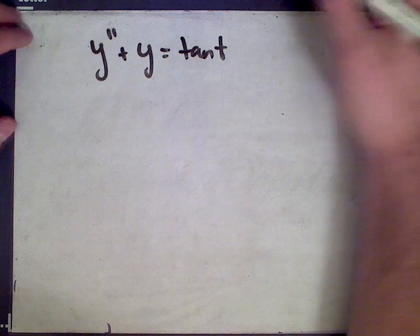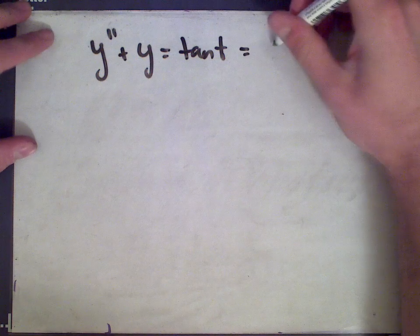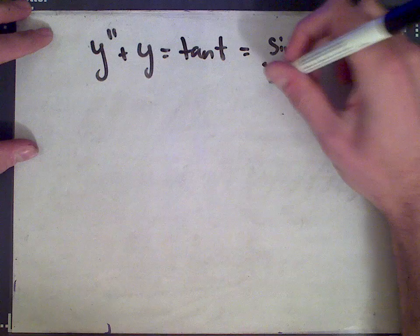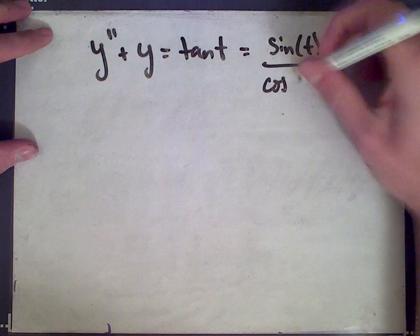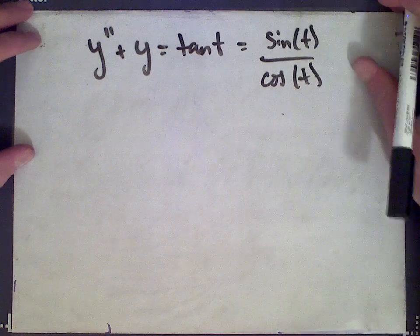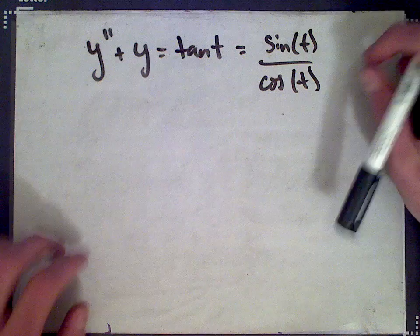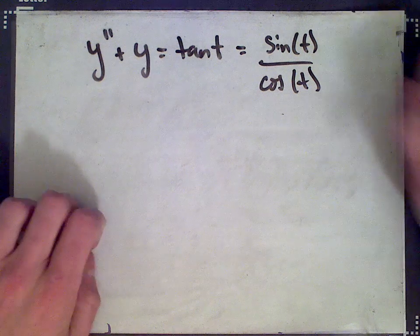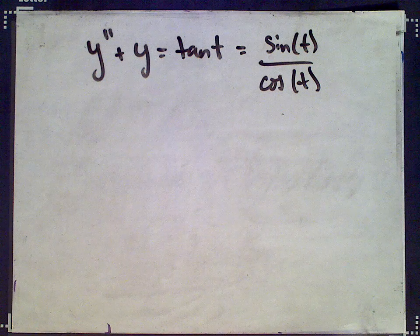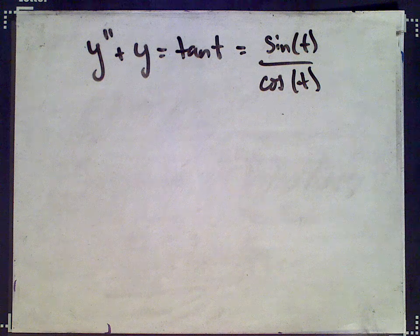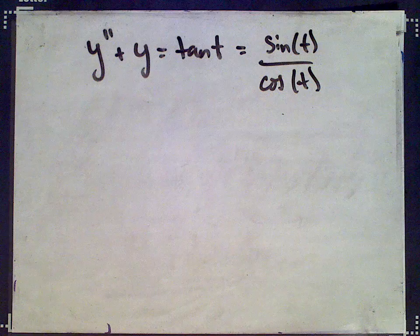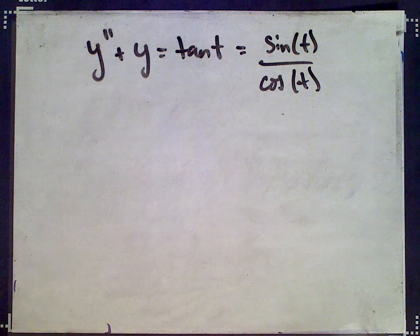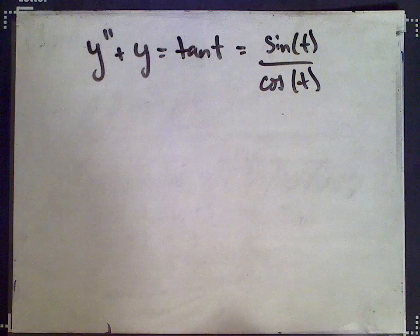Tan is sine over cosine. Generally speaking, when you have a quotient involved on the right-hand side of a differential equation like this, the method of undetermined coefficients doesn't work so well, and you need to appeal to the next method, which is variation of parameters.